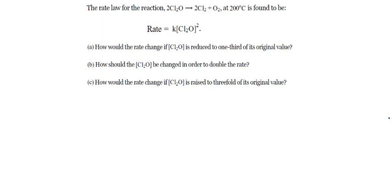We'll answer a question from chemical kinetics dealing with rate laws. The rate law for the reaction has been given. We need to find: how would the rate change if the concentration is reduced to one third of its original value, how should the concentration be changed in order to double the rate, and how would the rate change if the concentration is raised to three-fourths of its original value.